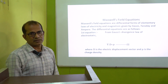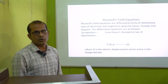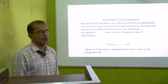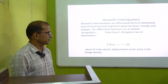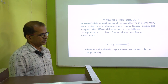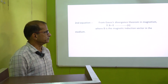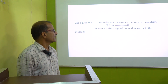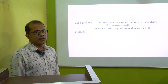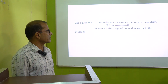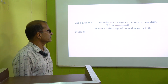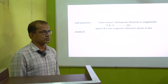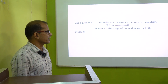The first equation is divergence of D equal to rho, where D is the electric displacement vector and rho is the charge density. The second equation is divergence of B equal to 0, where B is the magnetic induction vector. We get it from Gauss's divergence law in magnetism.